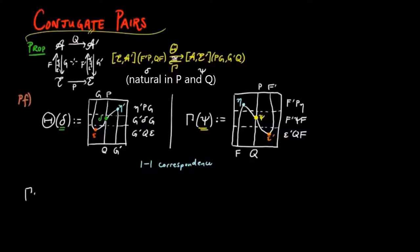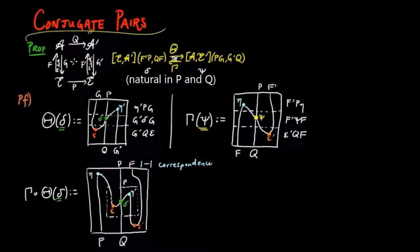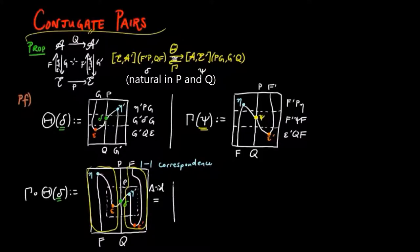We then define gamma on the natural transformation psi from pg to g prime q as epsilon prime qf, f prime psi f, f prime p eta, as given in the string diagram. We show that these assignments give us a one-to-one correspondence. If we take gamma theta on delta, we obtain the following string diagram, where the box on the inside is a natural transformation theta delta. Then we use the triangle identities for f, g and f prime, g prime respectively, which shows that this is equal to delta.